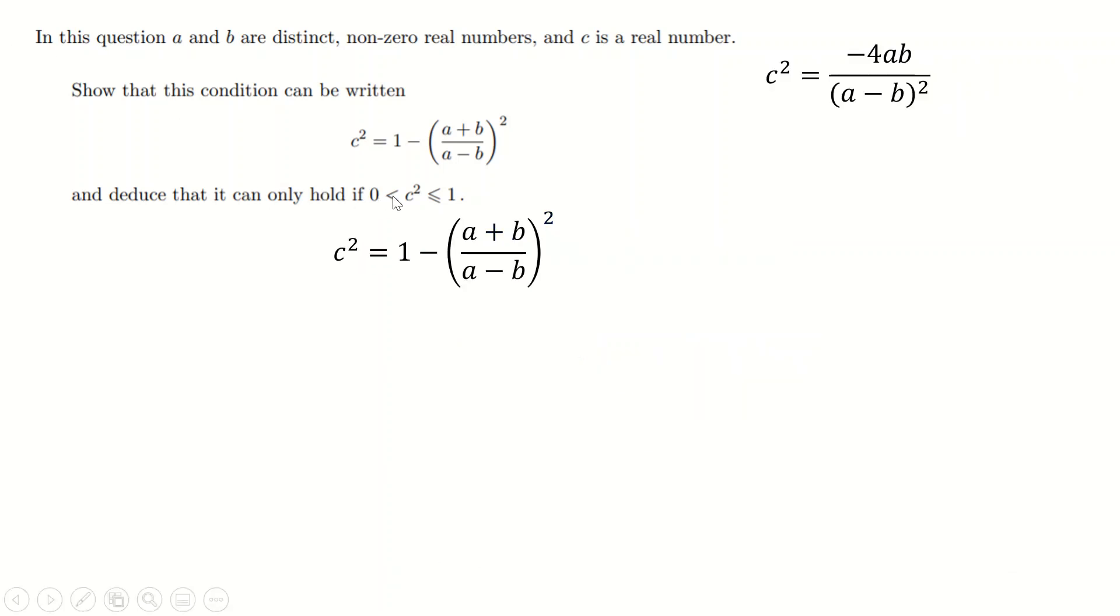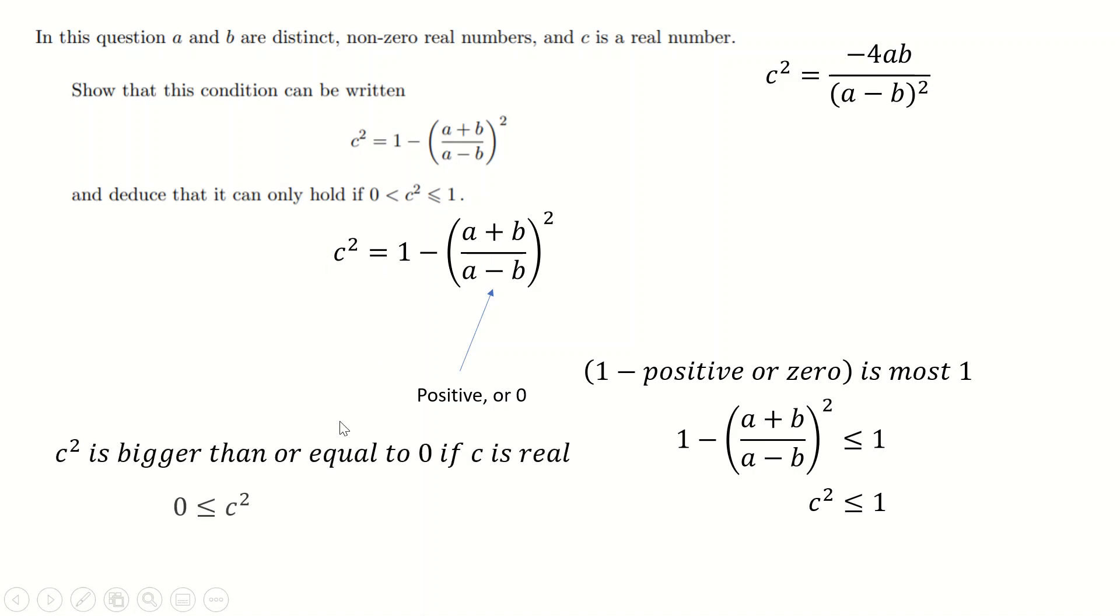We've only got one small thing to do here to finish off - deduce that it can only hold if c is bigger than zero and less than or equal to one. The first thing we'll say is that this number is squaring, which means this number is positive or zero, because when you square a number, it's either zero or positive. So c² is one, take away a positive or zero number. And that's at most one, because the biggest this expression can be is if this thing is zero and then you have 1 - 0. So c² at biggest is one. You can't be any higher than that. So c² is bounded at the top by one. That's this bound. Now we just need to get this bound. Well, that's actually reasonably okay, because c² is a number squared. For the same reason that this was positive or zero, this is positive or zero. So c² is bigger than or equal to zero, because it's a square number.